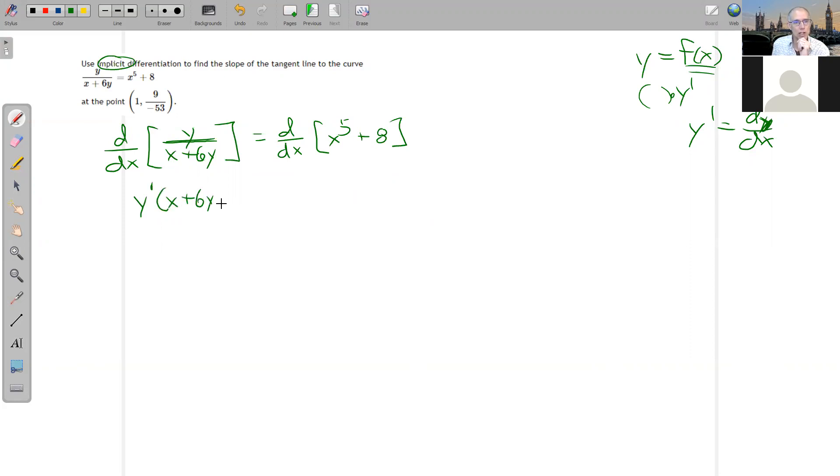And then subtract the top times the derivative of the bottom. Derivative of X with respect to X is 1. The derivative of 6Y, well, the slope of that is just 6, but then I have to remember to multiply by Y prime. Right there. And then all divided by X plus 6Y squared. Don't forget that in the quotient rule.